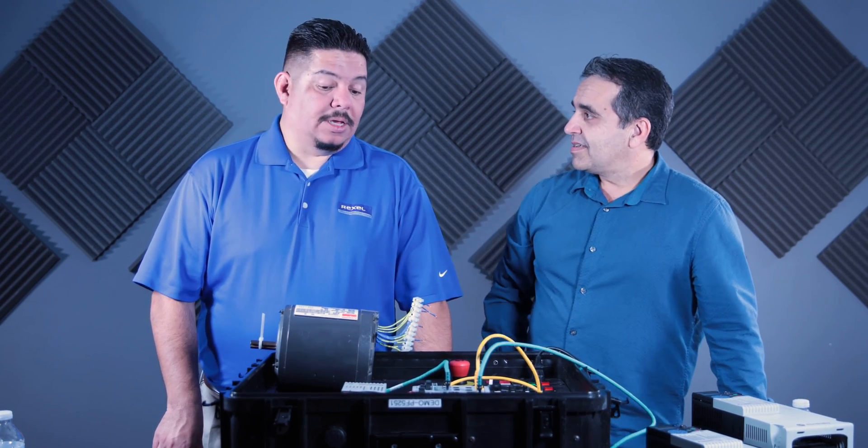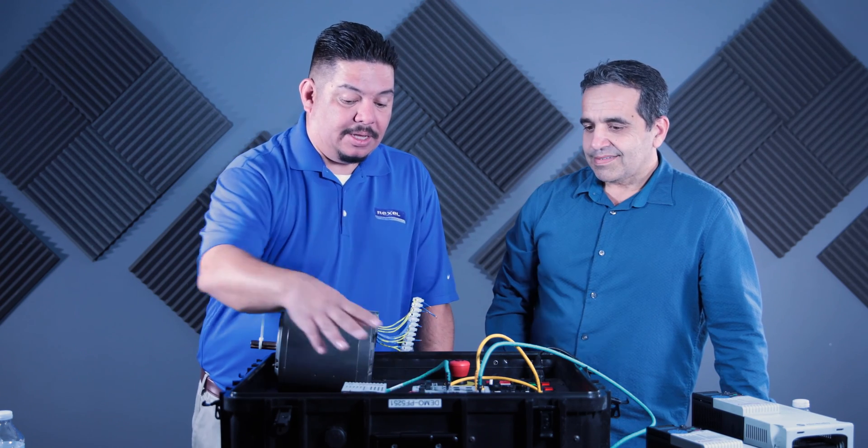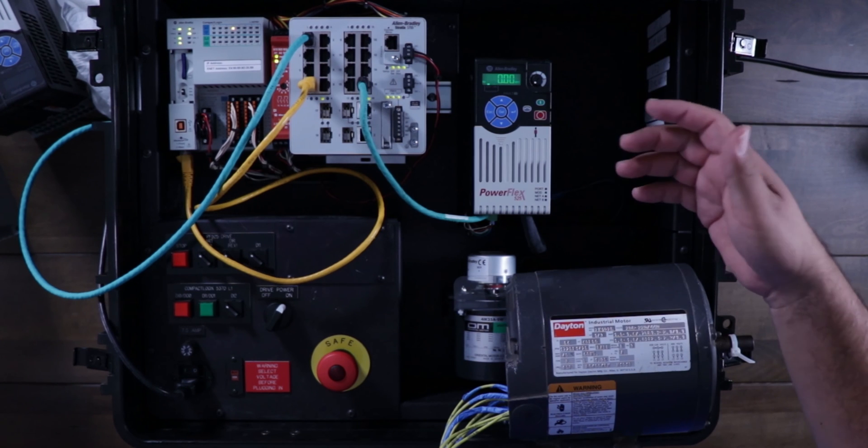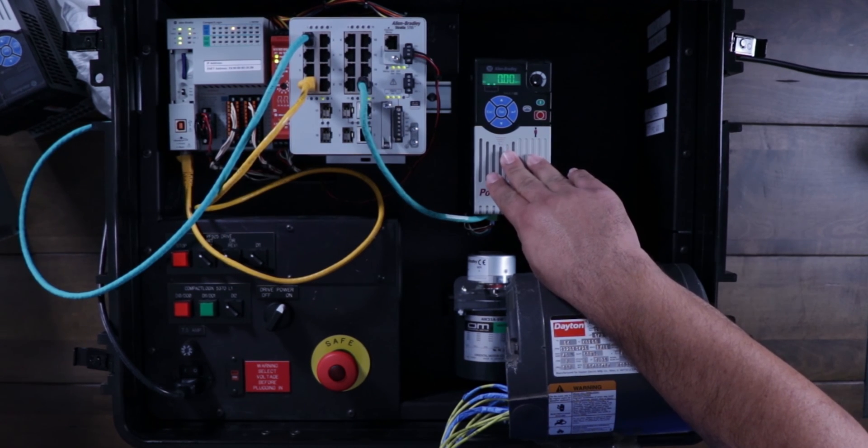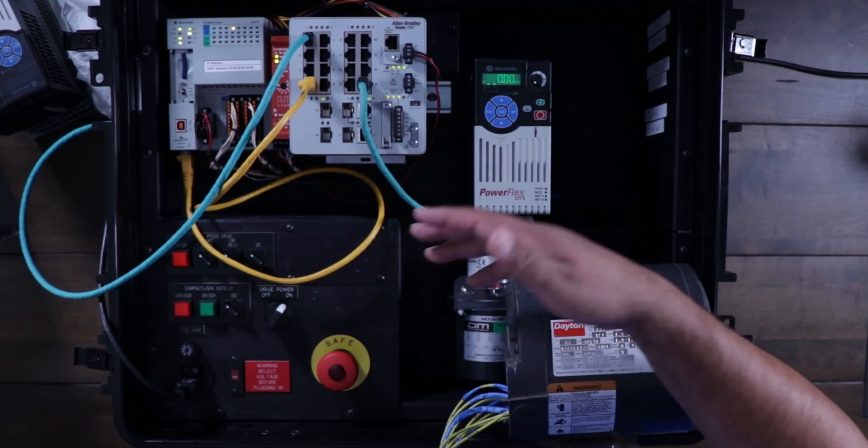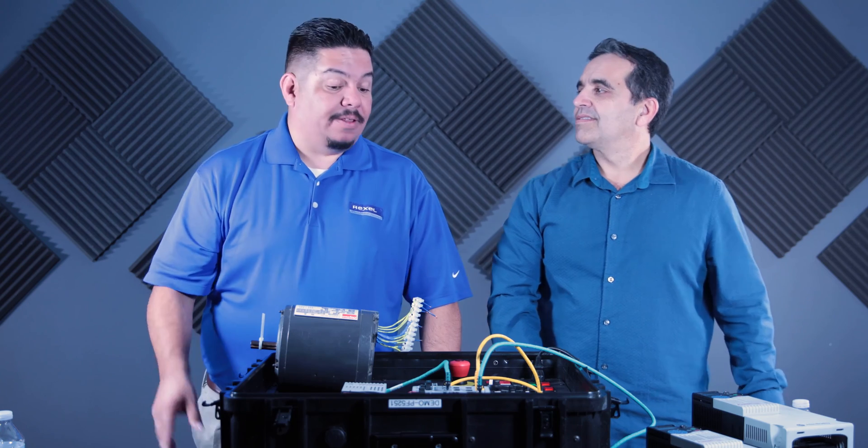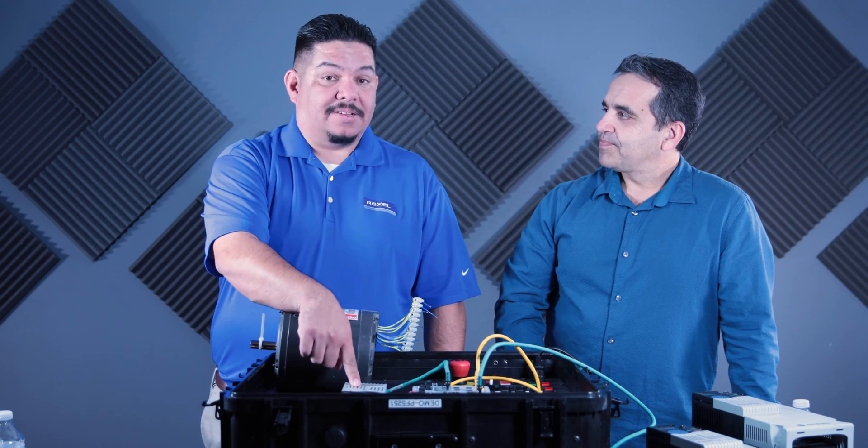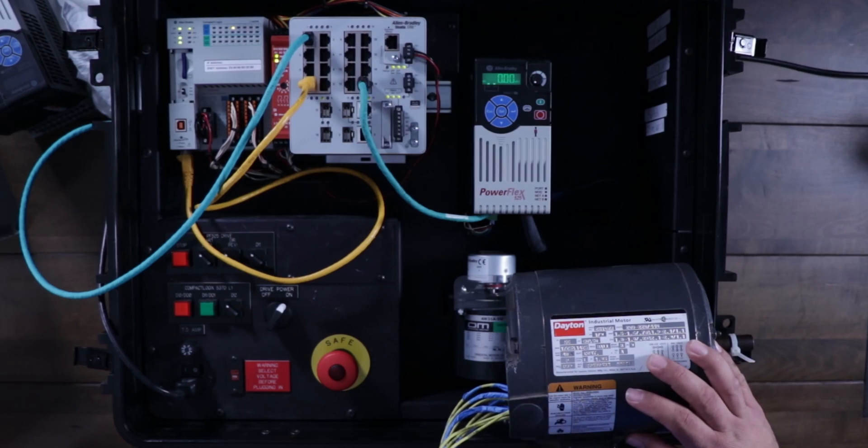So basically this drive is ready to go. It is. The other thing we need to probably talk about though, since we have a managed switch here is automatic device configuration. And what that allows is whenever this drive fails, if it fails, anybody, any maintenance person, anybody that you have authorized in your facility to change a drive out can do it without any prior knowledge of the parameters or settings, or even knowledge of a PLC. All they have to do is put in a new drive and the automatic device configuration will take over completely.